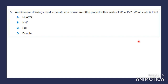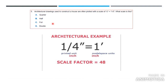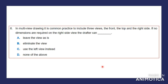Question five: architectural drawings used to construct a house are often plotted at a scale where a quarter inch equals one foot. What scale is this? The answer is a quarter scale. The scale factor of a quarter-inch to one foot is 48, meaning a quarter-inch drawing is 48 times smaller than the real-life building.